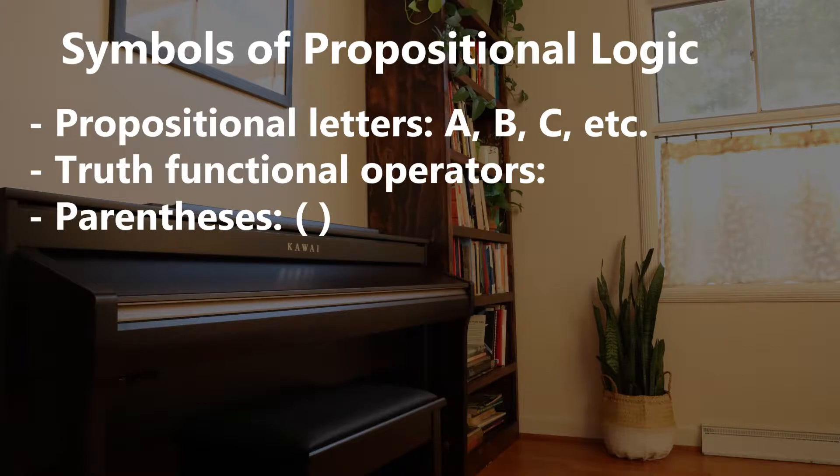The last thing I'll say about symbols is that sometimes there is a third type that's included as part of the language — sometimes it's just used as an optional feature. These are parentheses, or square braces or square brackets, and they're designed to indicate scope. Depending upon the text, they will either be defined in or out of the language, but they are symbols you will find in a formula in the language of propositional logic.